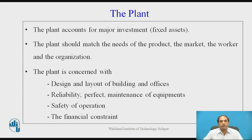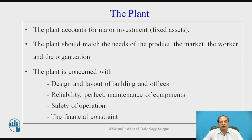When we talk about the product, the necessary second aspect is the plant. What is the plant capacity we are talking about? The plant accounts for the major investment — all fixed investments. Therefore, the plant should have concern about the design and layout of the building and offices, reliability, proper maintenance of equipment, safety of operations, and financial constraints. We need to optimize all of these because unless we do, it is not possible to meet the right cost requirements, and compromising on any one will have an adverse impact on customer satisfaction.